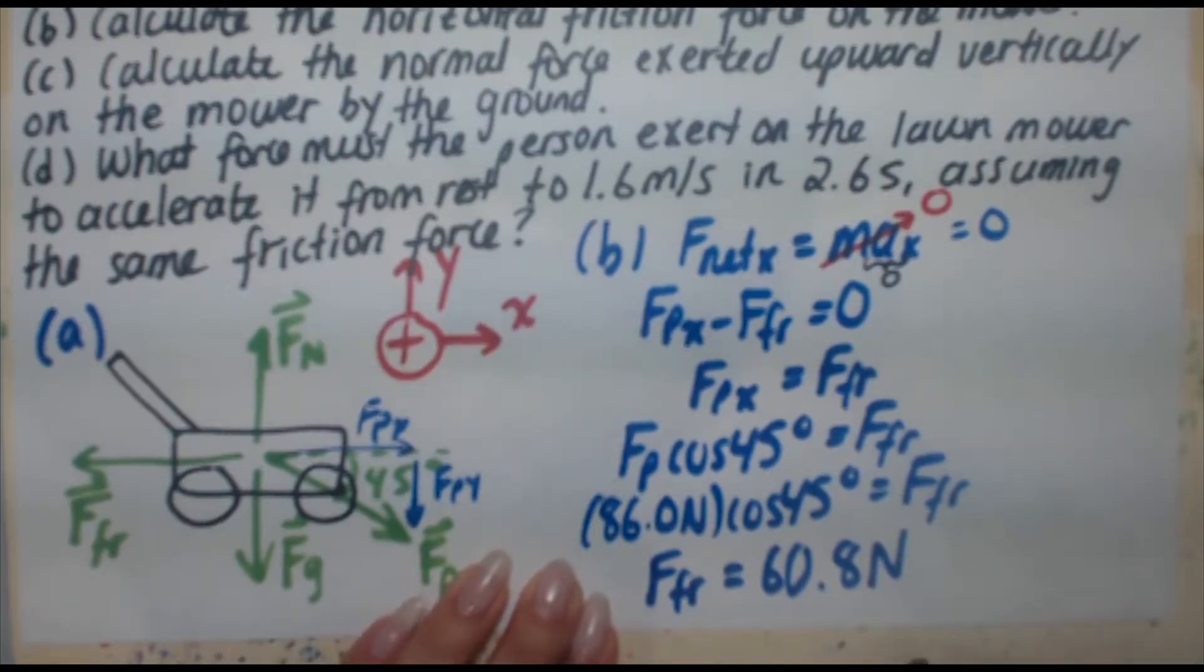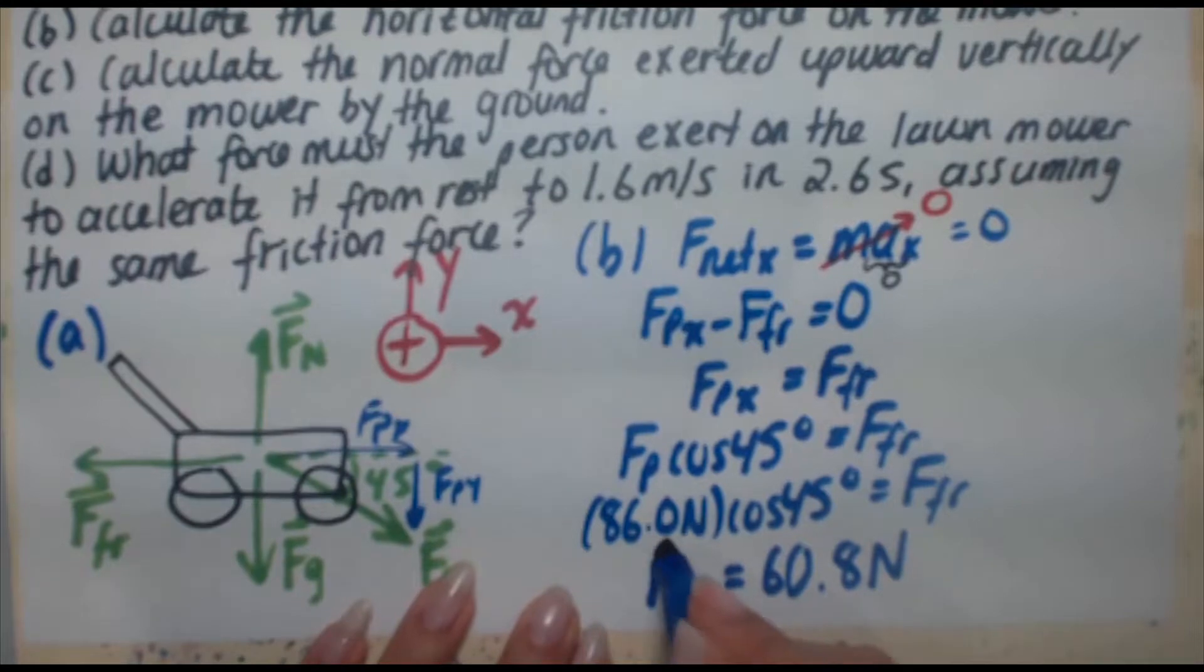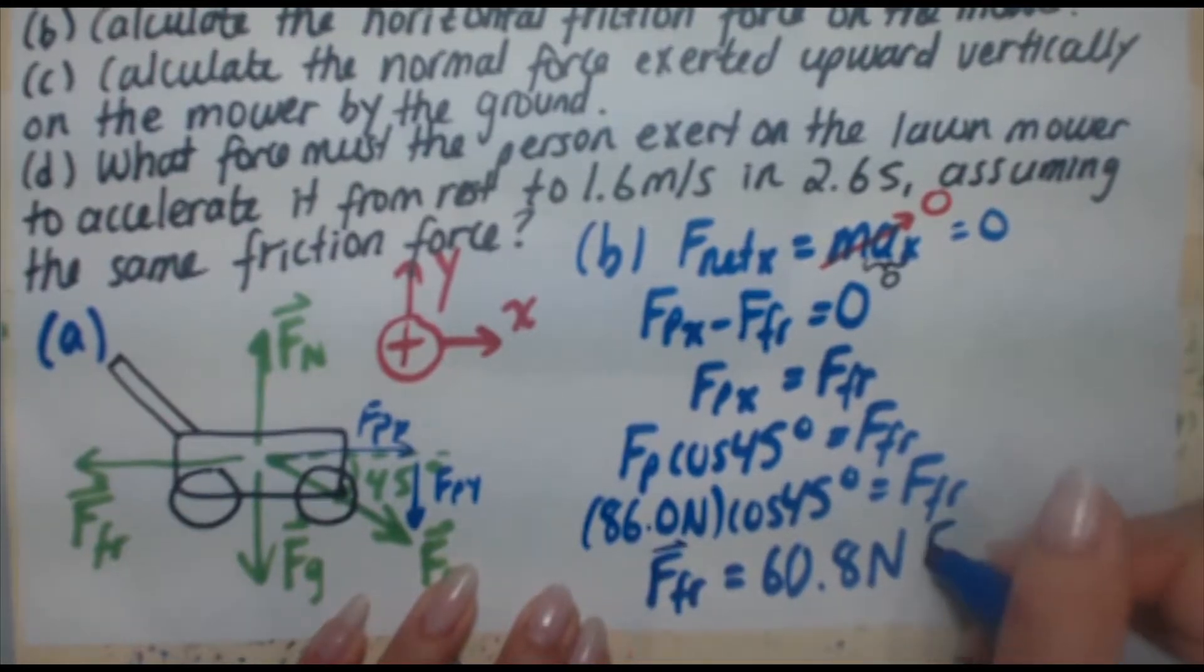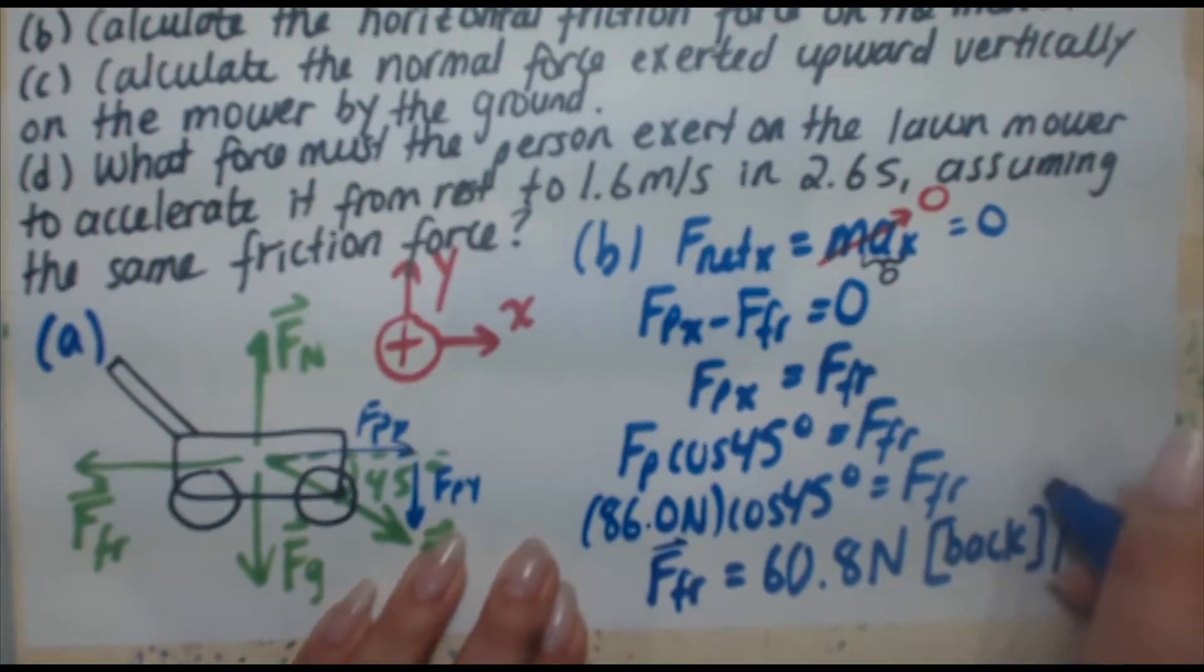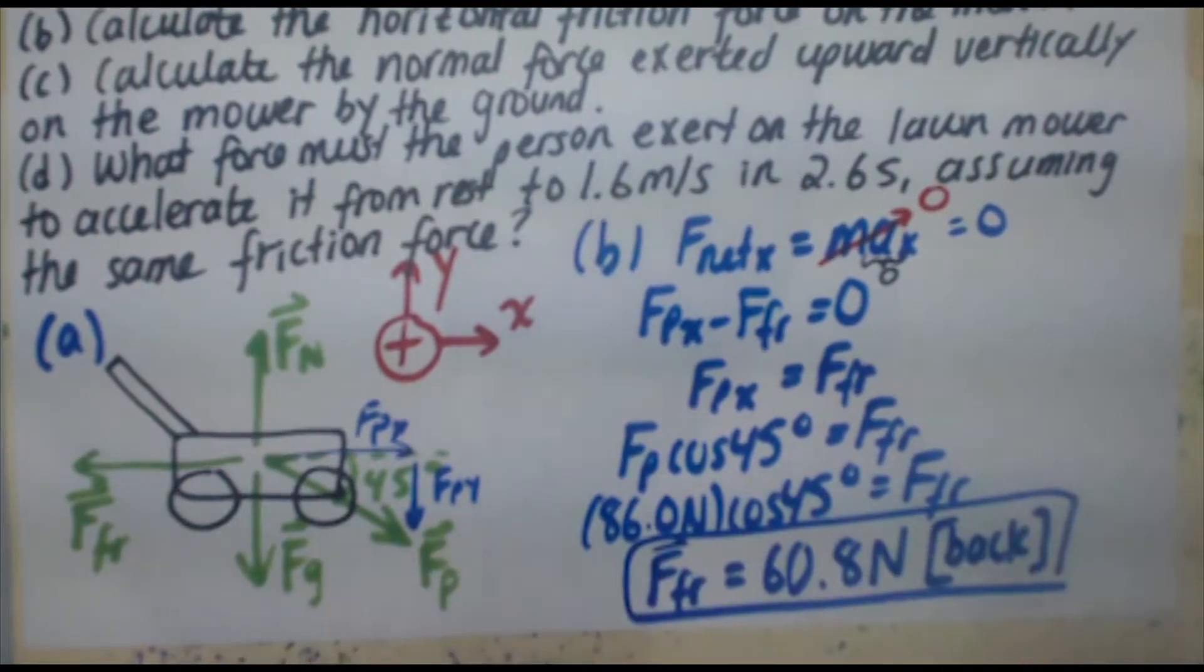So because it's a vector, it's a force, I'm going to give a direction to it. I'm going to put the vector symbol on top of there. And my direction, I'm going to put in square brackets. The direction is back. Okay, so there's the force of friction acting on the lawnmower.